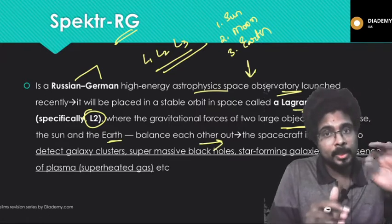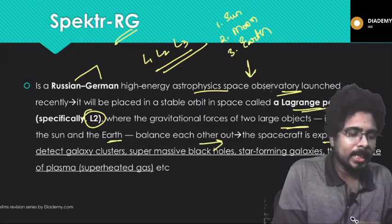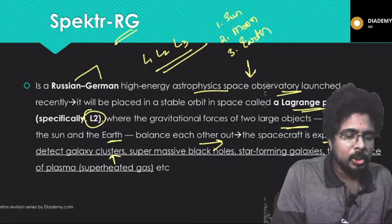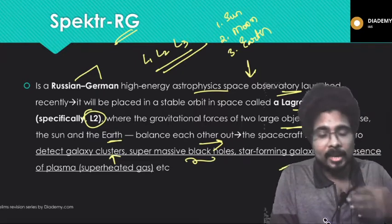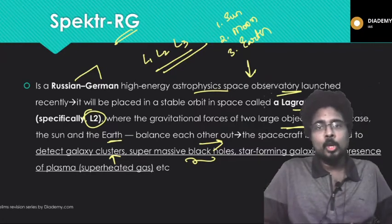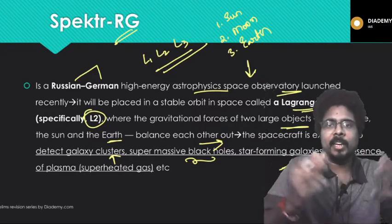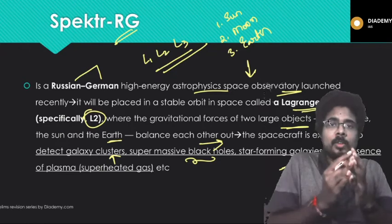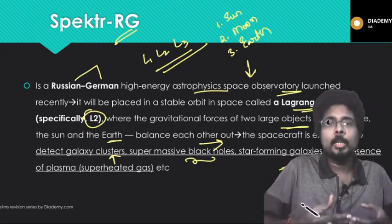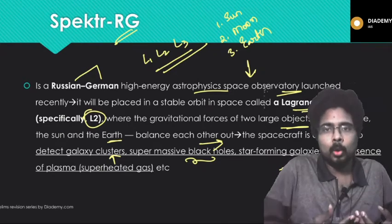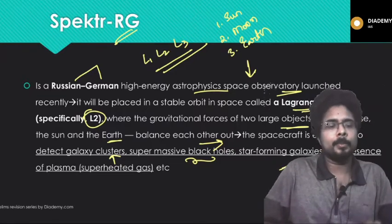Spectre RG is placed at Lagrangian point L2, where the gravitational forces of two large objects — the Sun and the Earth — balance out each other, so there is no gravity experienced by the spacecraft. It is expected to detect galaxy clusters, supermassive black holes, star-forming galaxies, and the presence of plasma. This will help us explore new planets, black holes, and galaxies. Spectre RG is a joint collaboration of Germany and Russia.